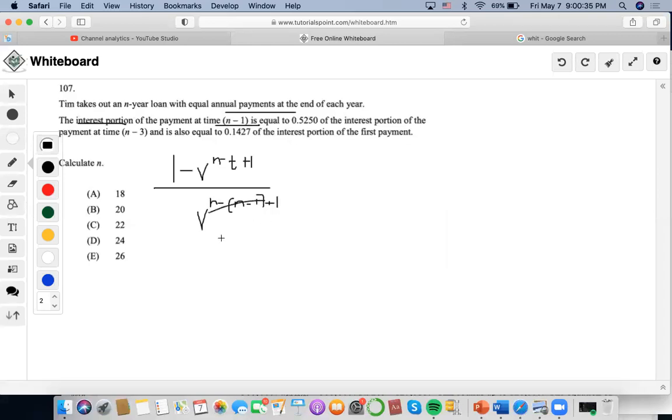So this will become 1 minus v squared equals 0.5250 of the interest portion of 1 minus, let's input n minus 3. So it would be minus n plus 3 plus, so it'll be this.